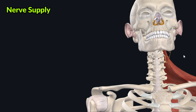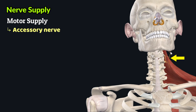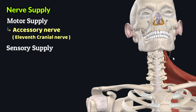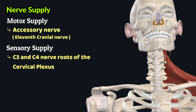In terms of nerve supply, the motor supply to the trapezius muscle comes from the accessory nerve, which is the eleventh cranial nerve, while the sensory supply comes from nerve roots C3 and C4 of the cervical plexus.